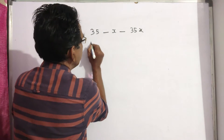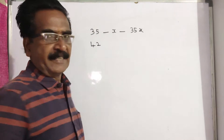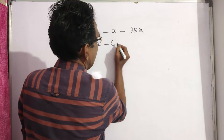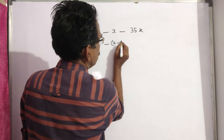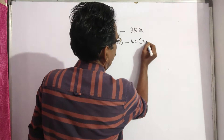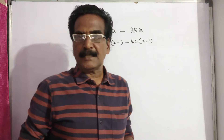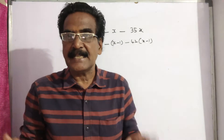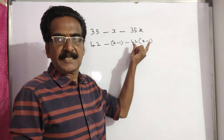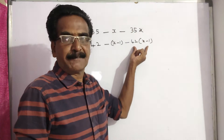Now, if the number of students increased by 7 — 35 plus 7 equals 42 — then the average is reduced by 1. But the total expenditure increases by Rs. 42. So this is the present total expenditure: 42 into (X minus 1). This was the earlier expenditure: 35X.